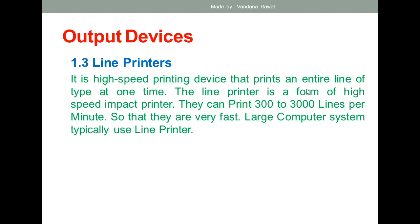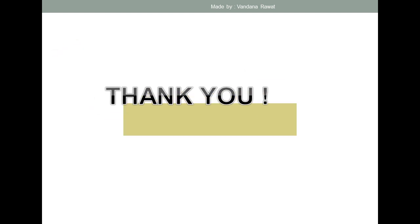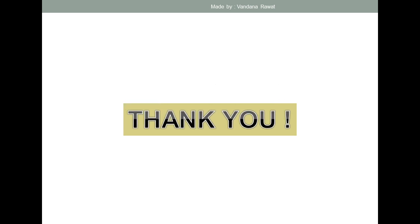The line printer is a form of high-speed impact printer and is one of the most commonly used impact printers. It can print 300 to 3,000 lines per minute, making it very fast. Large computer systems typically use line printers. This concludes our discussion of all types of impact printers. In the next lecture we will cover non-impact printers. Thank you everyone.